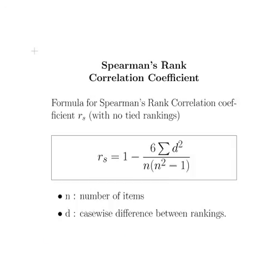Here's the formula for Spearman's rank correlation coefficient, R subscript S. The subscript S is to denote that it's Spearman's rank correlation rather than Pearson's. This formula applies when there are no tied rankings.